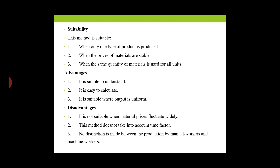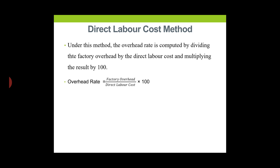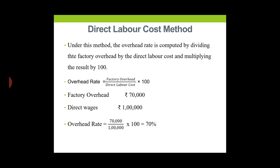Next is the Direct Labor Cost Method. Under this method, the overhead rate is computed by dividing the factory overhead by direct labor cost and multiplying by 100. Overhead rate = (Factory Overhead / Direct Labor Cost) × 100. For example, if factory overhead is Rs. 70,000 and direct wages are Rs. 1 lakh, then overhead rate = 70,000 / 1,00,000 × 100 = 70%.